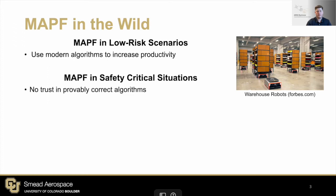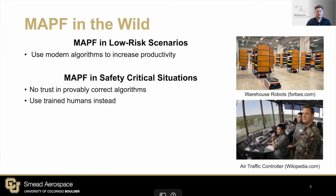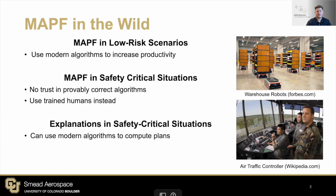However, in safety-critical situations these algorithms are not used because there's no trust between the algorithms and the end users. Instead, we typically end up using trained humans. For example, air traffic controllers compute plans for multiple aircraft at once, despite the availability of many algorithms that could solve the same problem. Utilizing explanations within safety-critical applications would allow us to solve the problem more efficiently.